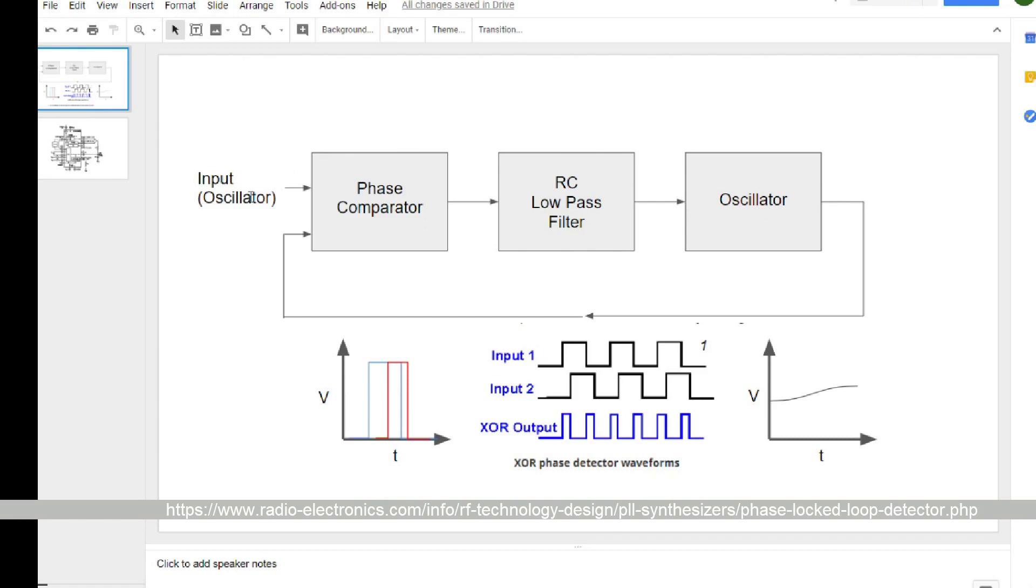The input oscillator, we're going to say, comes from any one of our oscillators, whatever you have in your rack, and that goes into the phase comparator. The phase comparator's job is to look at two input waves and compare their phase so it knows whether it needs to speed up or slow down the oscillator.